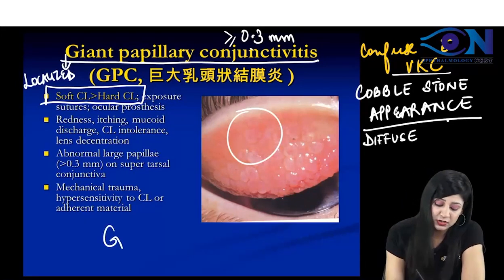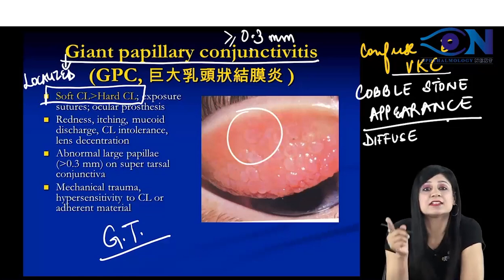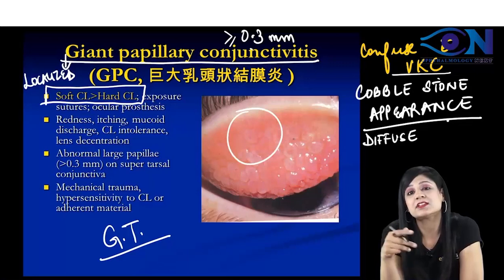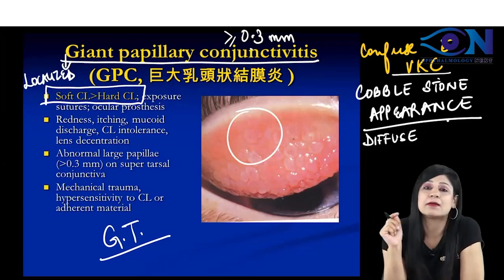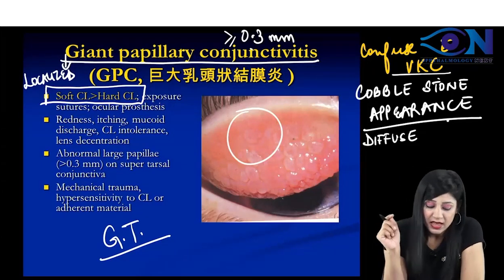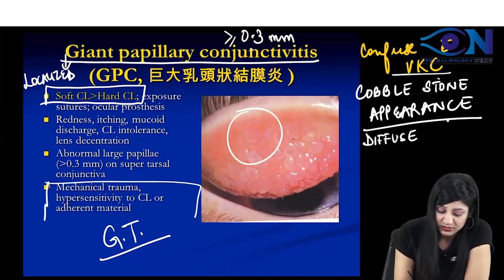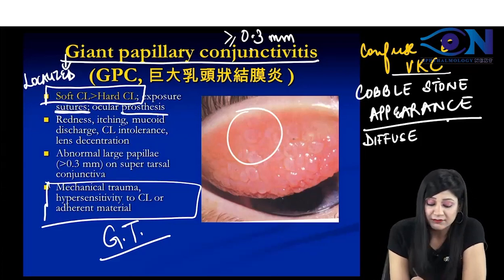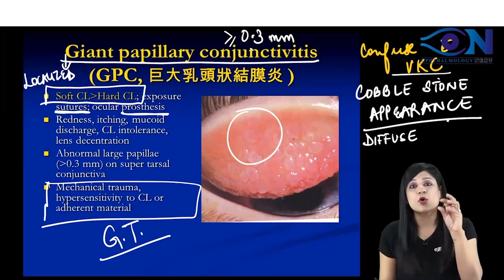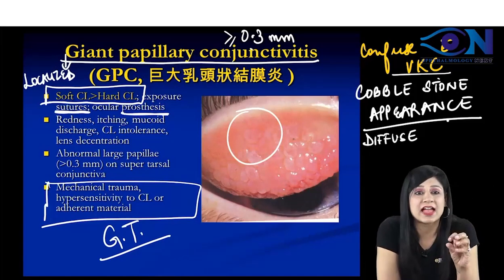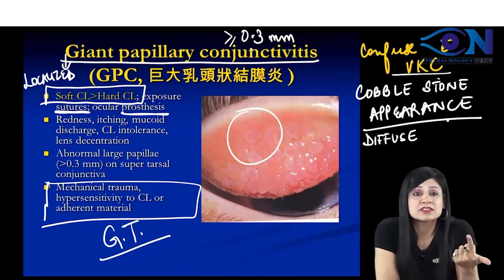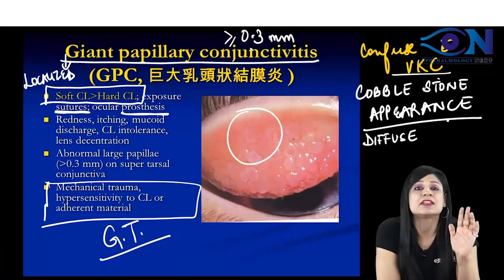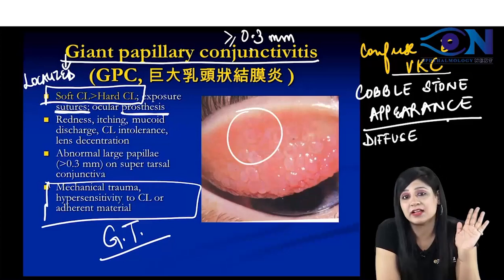There was a previous question about which contact lens type is more commonly associated. Always remember: soft contact lenses are more commonly associated compared to hard contact lenses. Apart from contact lenses, other causes include trauma, sutures, and ocular prosthesis. It is a localized hypersensitivity reaction to contact lenses, prosthesis, or sutures causing papillae greater than 0.3 mm. Therefore, the answer is clearly giant papillary conjunctivitis.